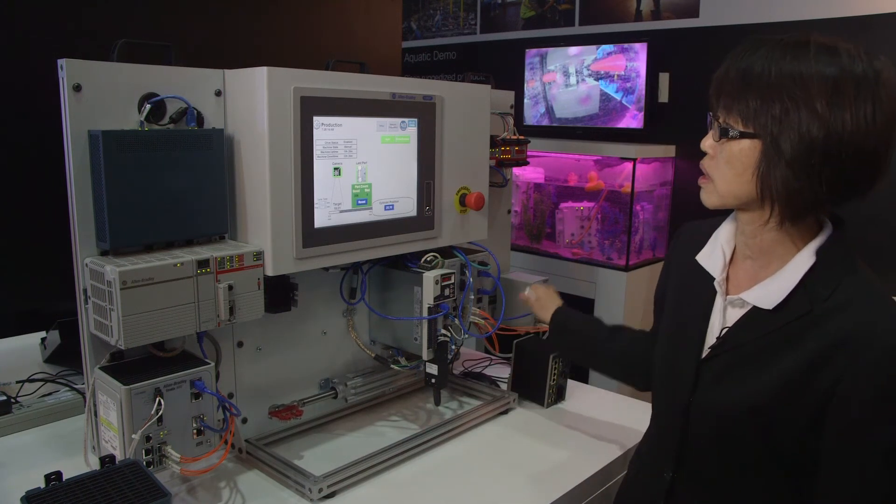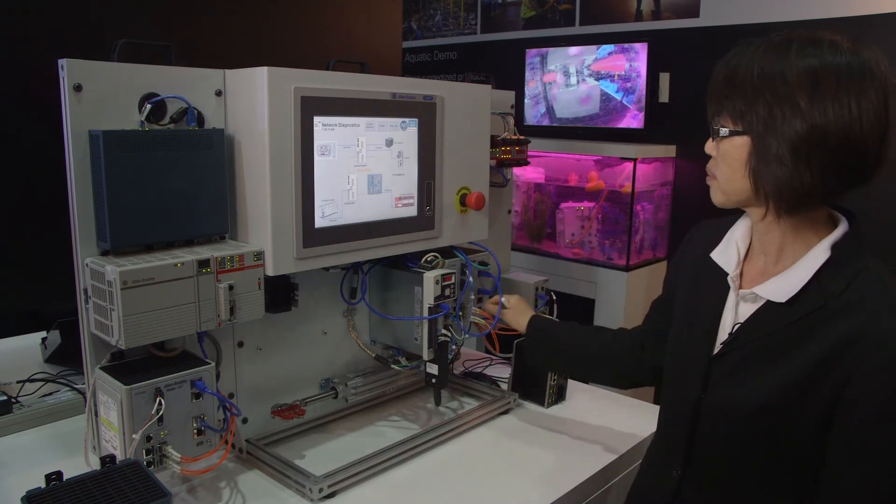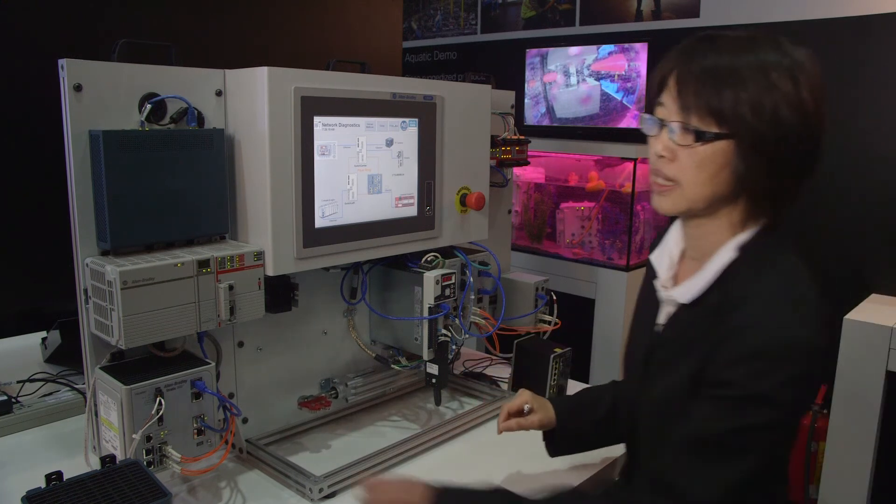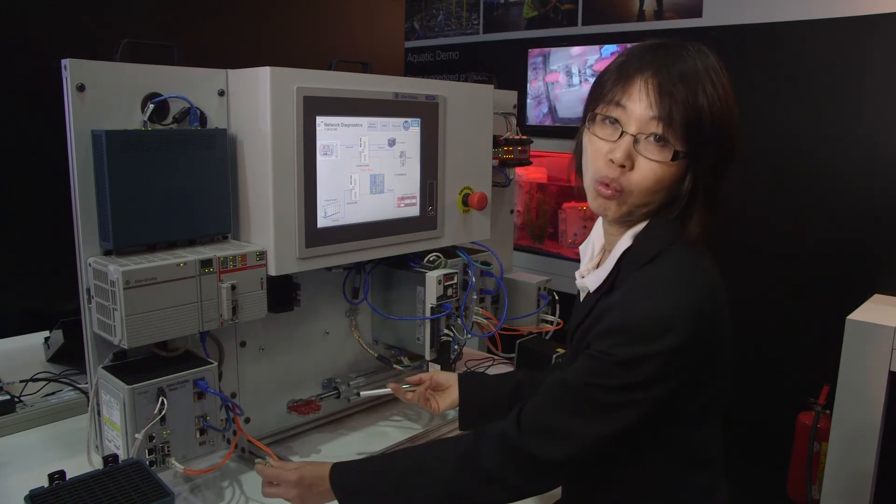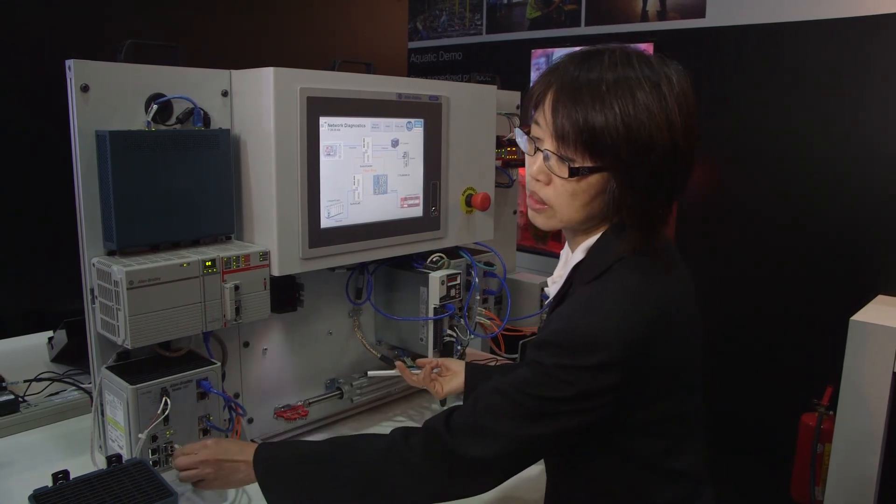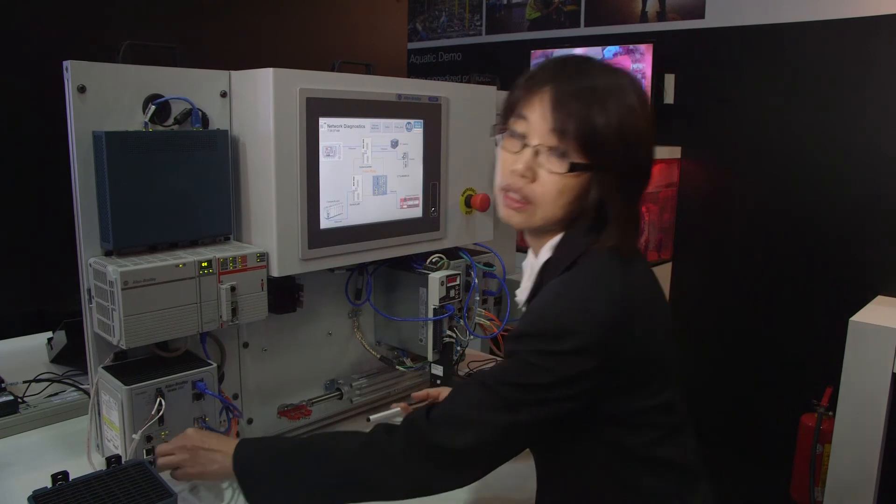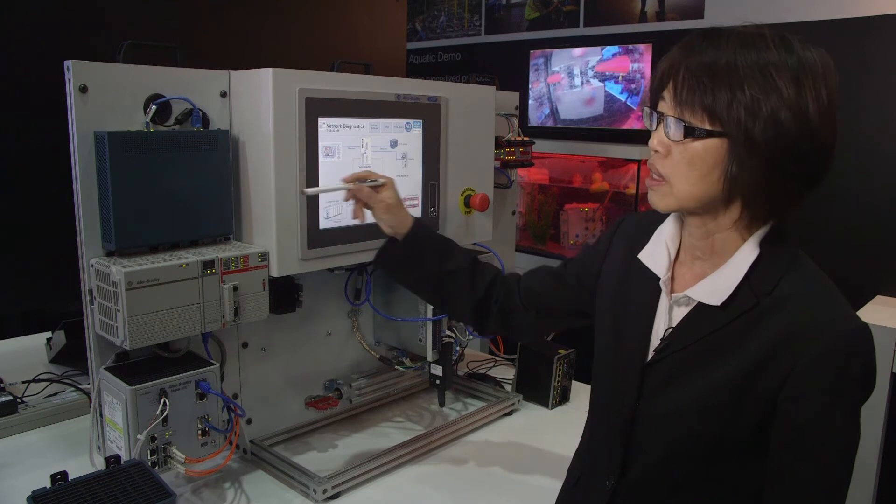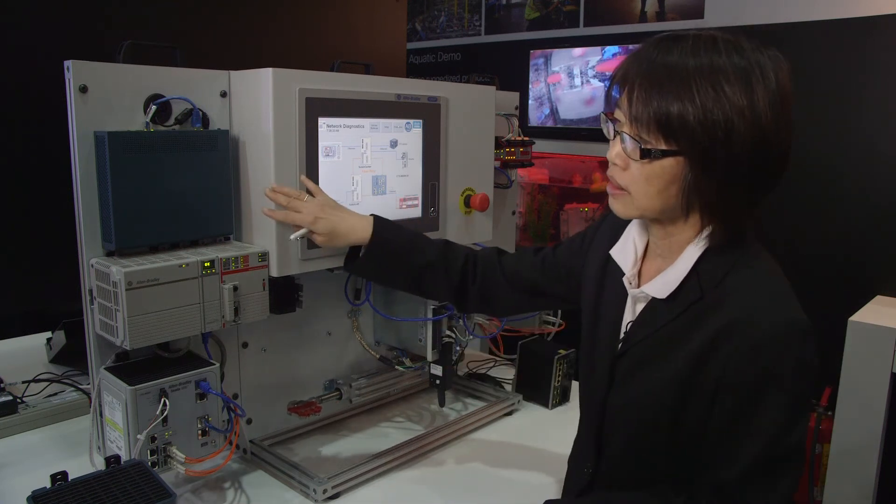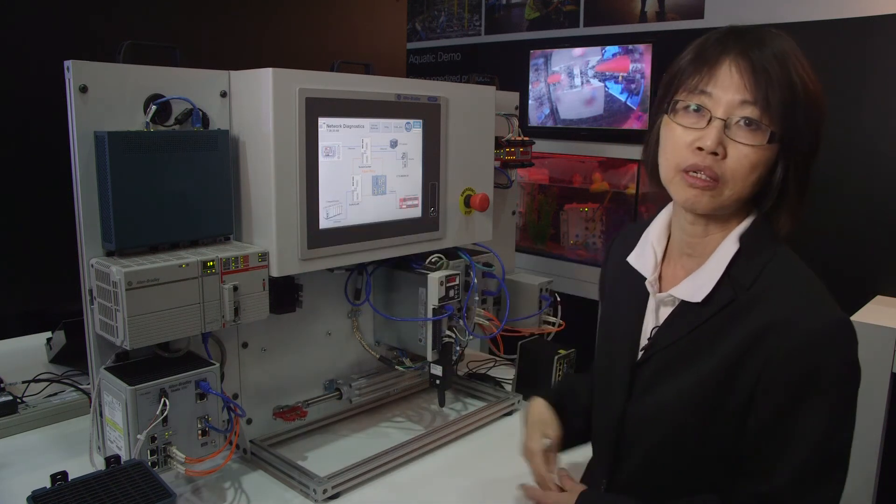Now I can demo the Cisco RAP technology. If I pull out a cable here, as you see, the motor will continue to work. This means the redundant network is working correctly. Secondly, we have the ASA-5500, which acts as a firewall to protect the PLC.